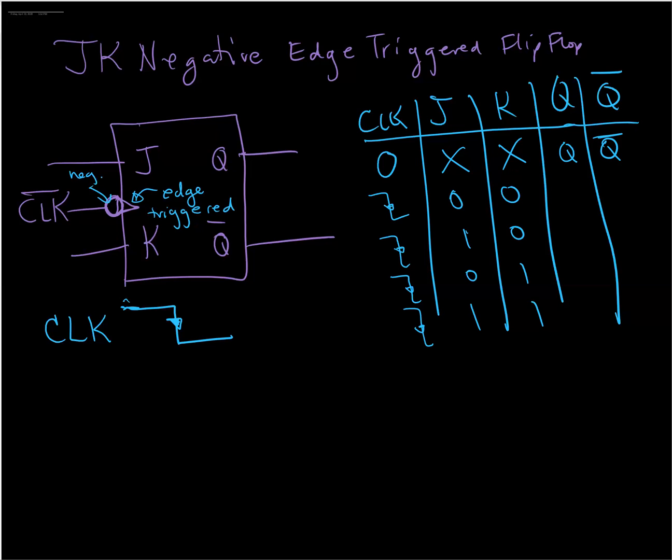If J and K are zero, there's no change in Q and Q bar. So they stay Q and Q bar respectively. If J is high, that is the set condition. So Q becomes high and Q bar is zero. If K is high with J zero, that is the reset condition where Q bar is one and Q is zero. And if they're both high, unlike the SR flip-flop, this is not an invalid state.